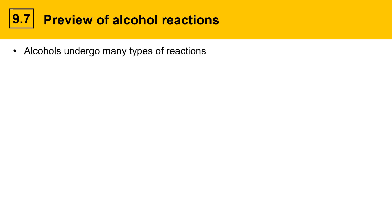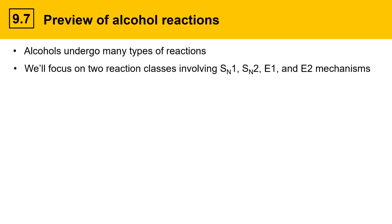Alcohols are a diverse functional group that undergo many types of reactions — they have a very rich chemistry. We'll just focus on two reaction classes that involve SN1, SN2, E1, and E2 mechanisms that we learned in previous chapters.